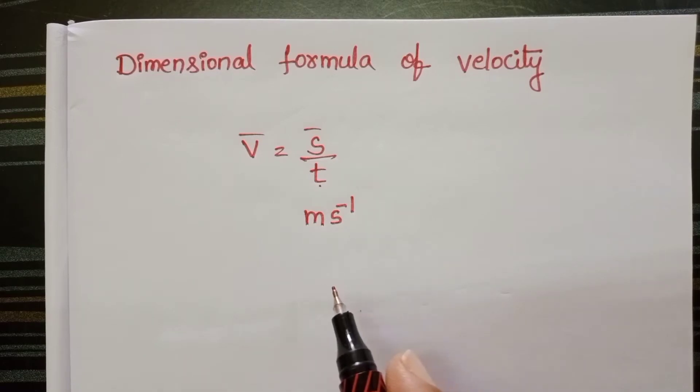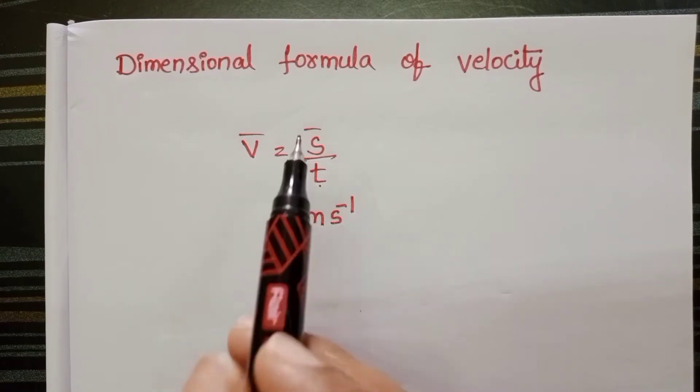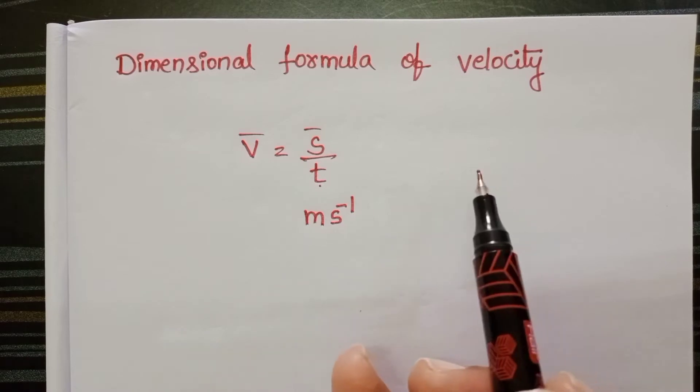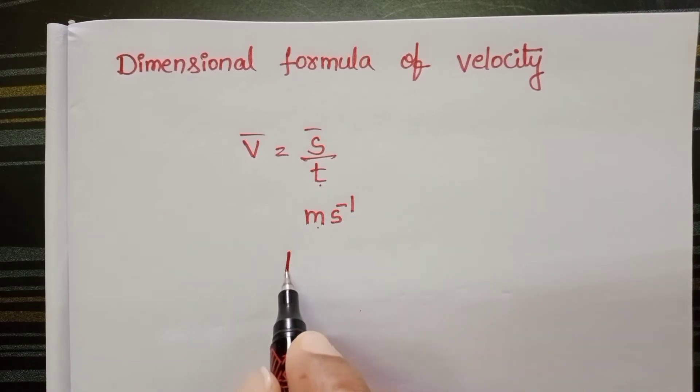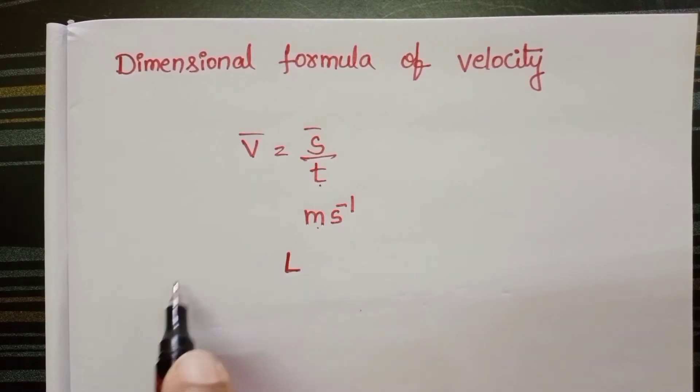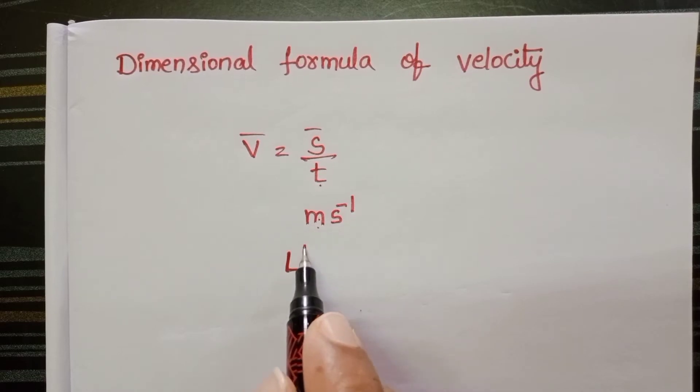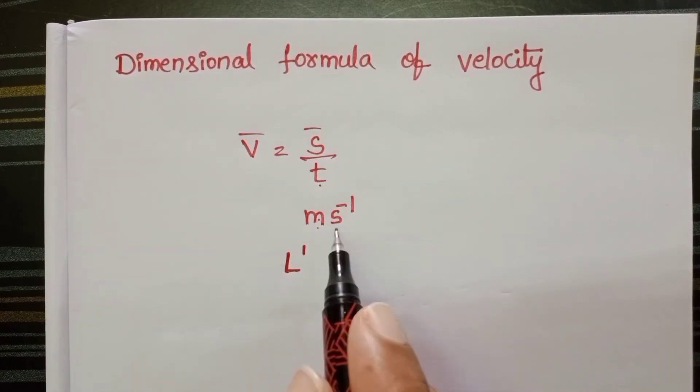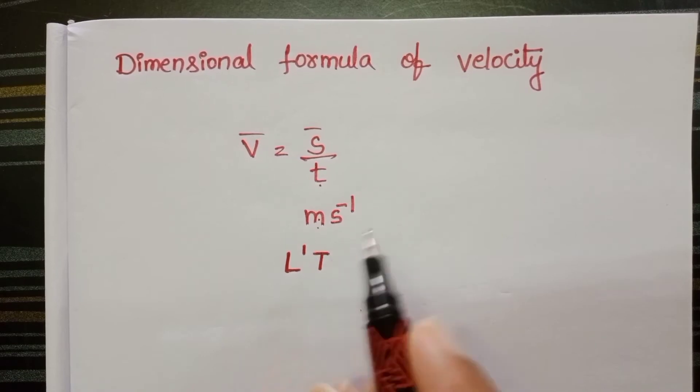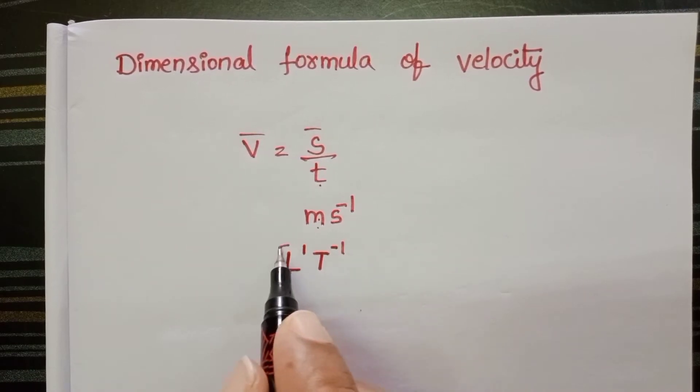We can write the dimensional formula either by using its formula or unit. Dimension of length is denoted with letter L. Here meter so L is raised to the power 1 and time T power minus 1.